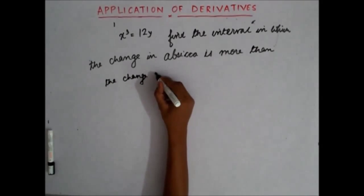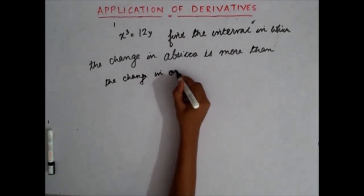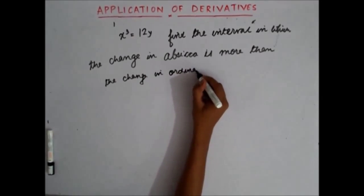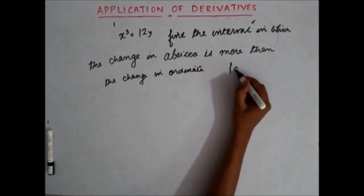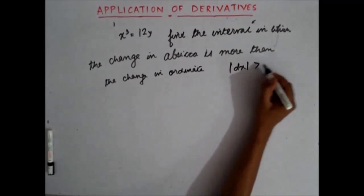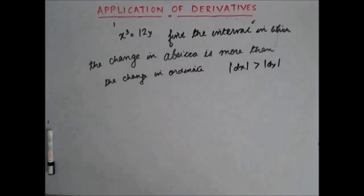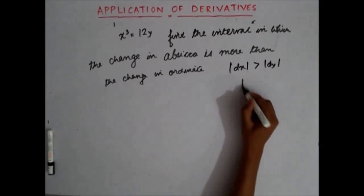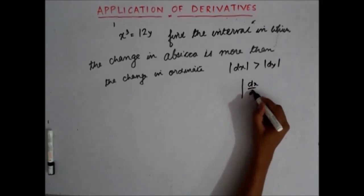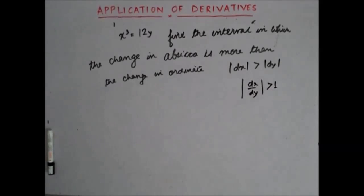So let's say delta x should be more than delta y. Or in other words, dx by dy should be greater than 1.